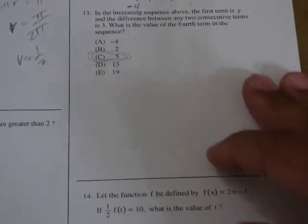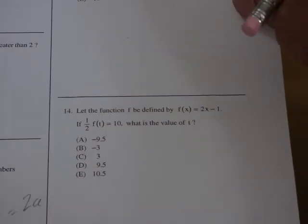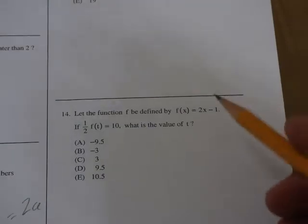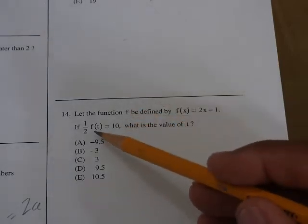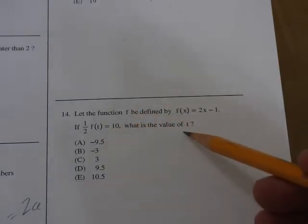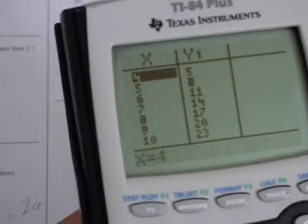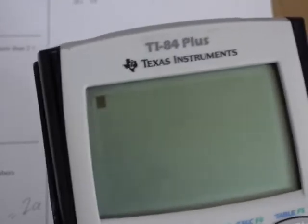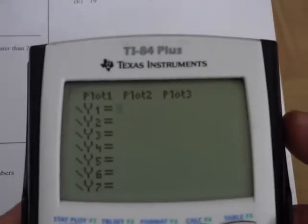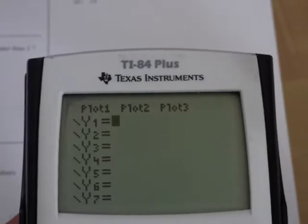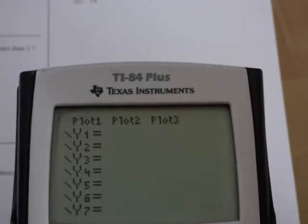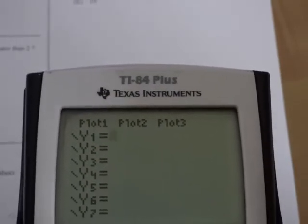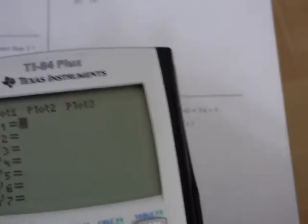And it says, let the function f be defined by f(x) = 2x - 1. If 1/2 of f(t) equals 10, what is the value of t? Now, again, one of the things I want to stress is that there are a lot of ways to solve these problems. There's no one right way. But one of the things that I'm trying to convince you of is there are many opportunities to use your calculator a little more strategically. I think it's easier to let the calculator do a lot of the arithmetic and calculations. And so I try to whenever possible.